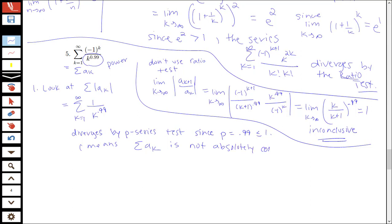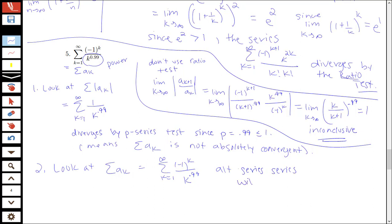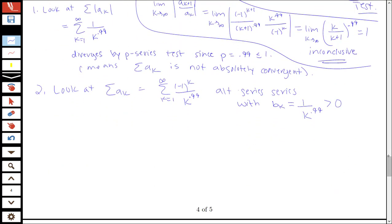So I just need to figure out if the series is divergent or actually conditionally convergent. I look at the original sum from k equals 1 to infinity of negative 1 to the k over k to the 0.99, and I see that's an alternating series with the magnitude of the terms b_k equal to 1 over k to the 0.99. To apply the alternating series test, I'd like to show that b_k goes to 0 as k goes to infinity, and that b_{k+1} is less than or equal to b_k.